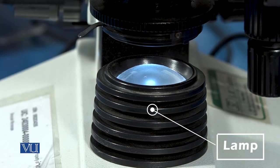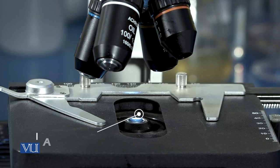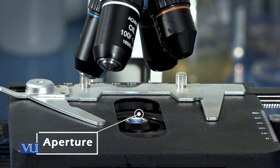The lamp or illuminator is used as a light source. The light passes through a small opening called the aperture.